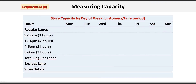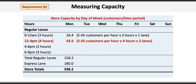The best way to solve this problem is to put together a table with days of the week across the top and time slots for scheduling regular lanes in the rows. For the 9 a.m. to 12 p.m. slot on Monday — a 3-hour slot with one lane open — 5.45 customers per hour times 3 hours times one lane gives 16.4 customers. For the 12 to 4 slot, a 4-hour slot with two lanes open, 5.45 times 4 times two lanes gives 43.6 customers.